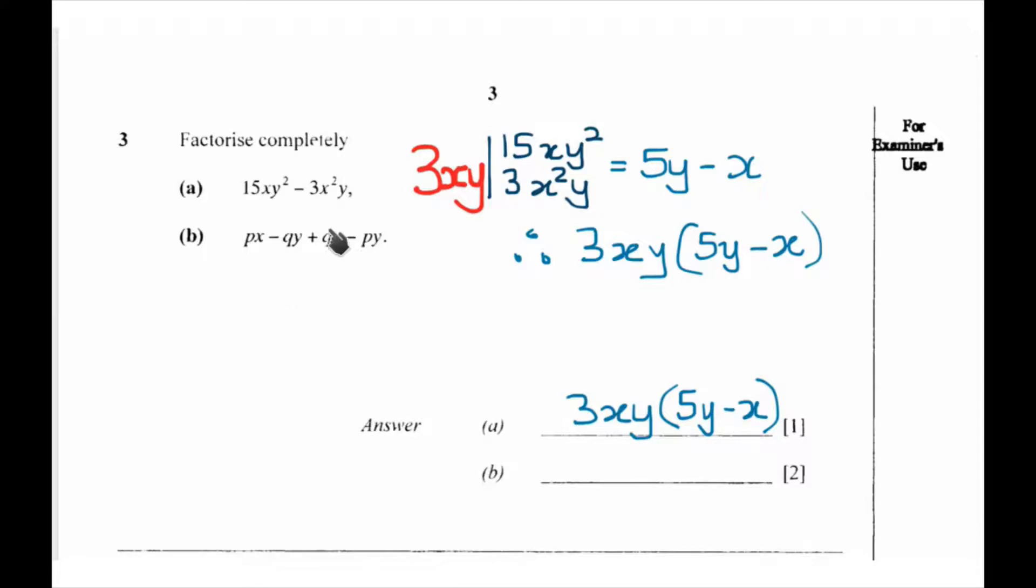Then here we want to factorize px - qy + qx - py. We group them two by two, and you can see that we do not have any common term that we can divide into px and qy or qx minus py.